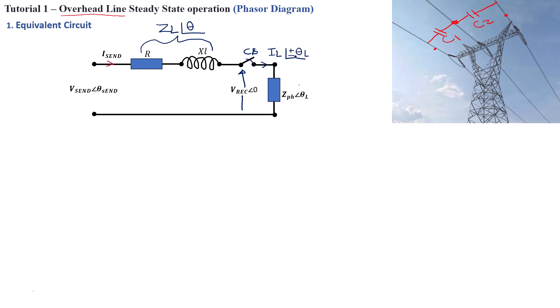The sign for the current angle will be dependent on the type of load. If the load is purely capacitive, the current will lead the voltage by 90 degrees, giving a positive angle for the current. Inversely, if the load is purely inductive, the current lags the voltage by 90 degrees, so you're going to have a negative angle for the current. That is what you need to keep in mind while analyzing this type of circuit.